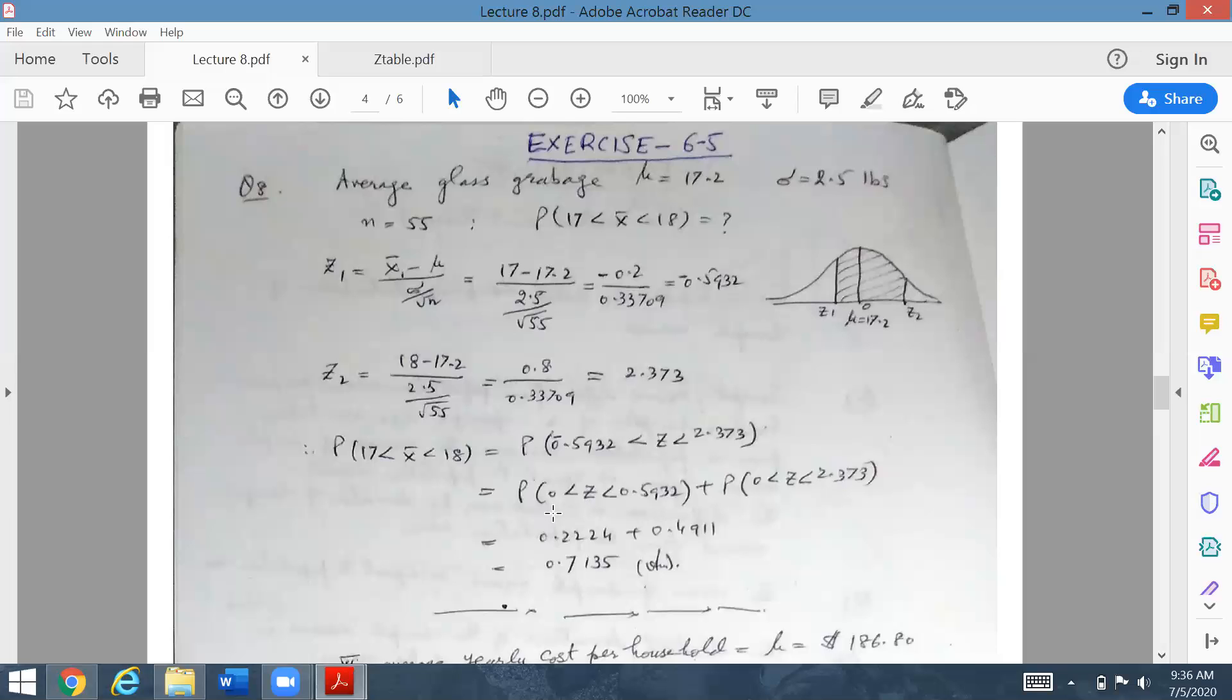All of you please write down. This is now equal to area up to z2 equals 2.373, this is the big area you will take first, then minus the area up to z equals minus 0.59.